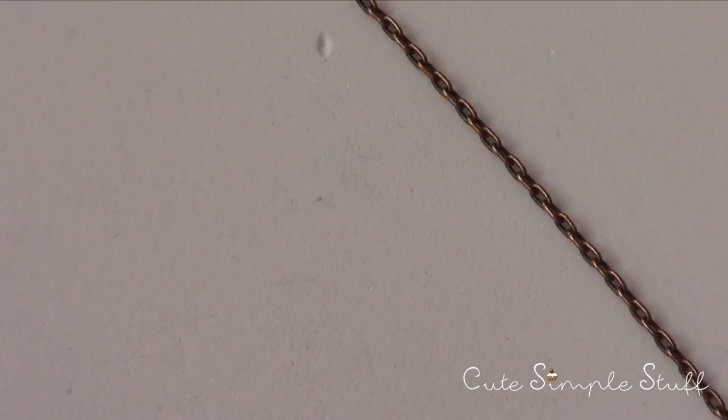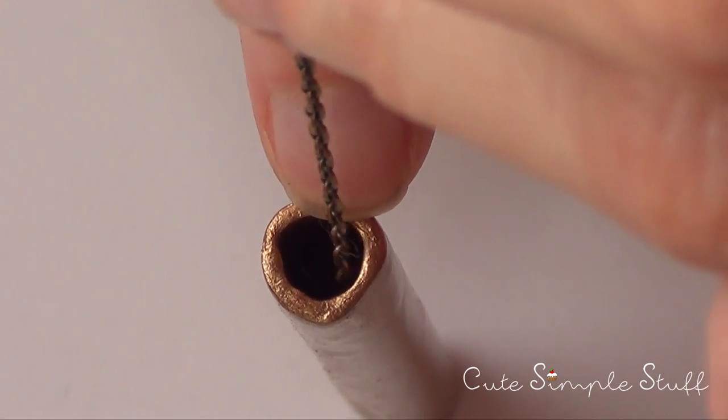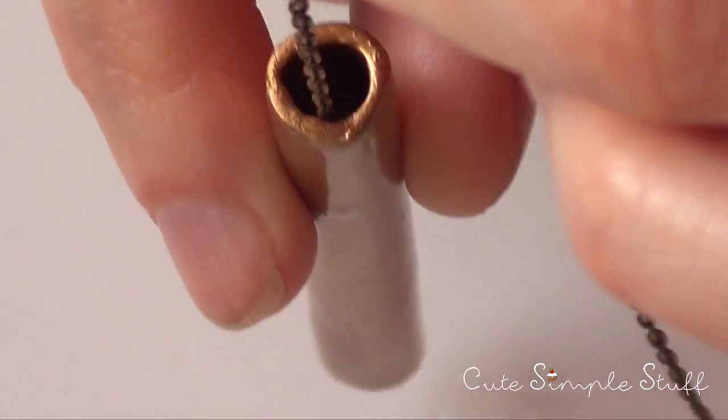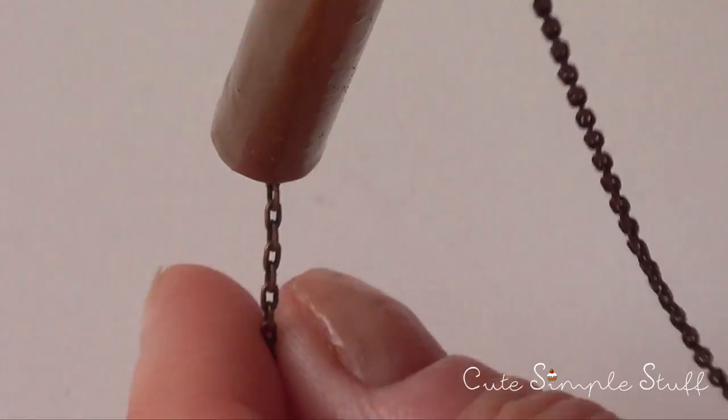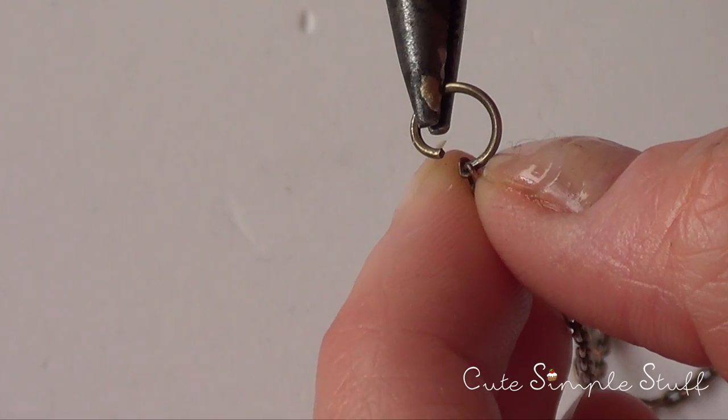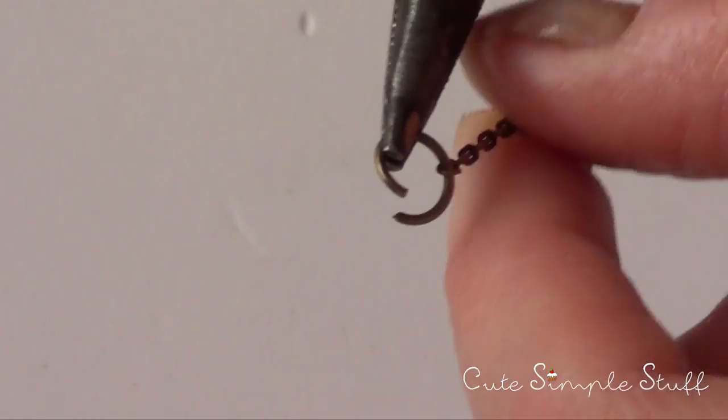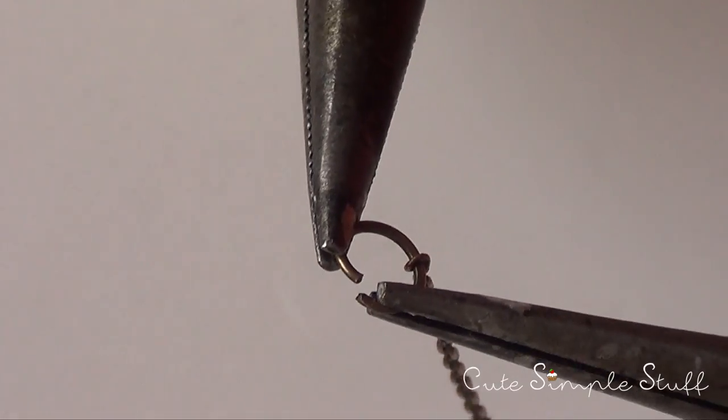The other side is going to be the same pretty much. We're just going to place our chain through the necklace which I call the tunnel. I'm just going to open my jump ring, place my chain in and then close my jump ring and that's pretty much it.